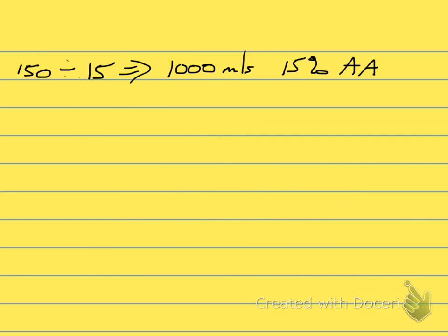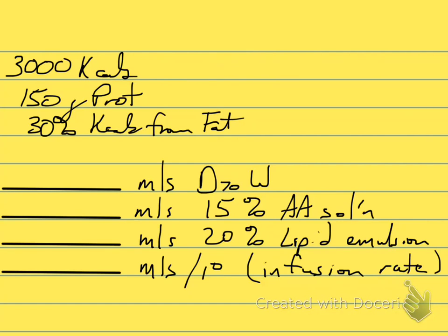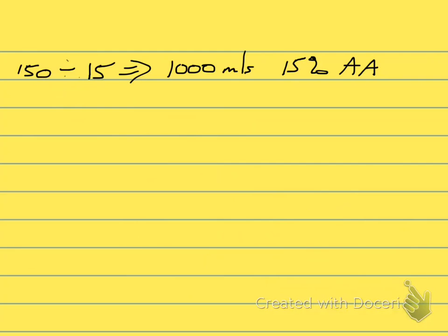The next step is to put in 1,000 mL for our amino acid solution and then determine what the volume of fat is going to be. We know we've got 3,000 calories to provide and 30% of those calories are going to come from fat — that's what was given.